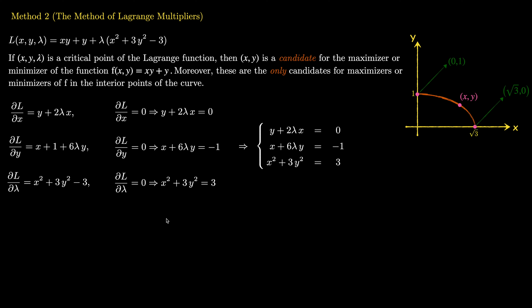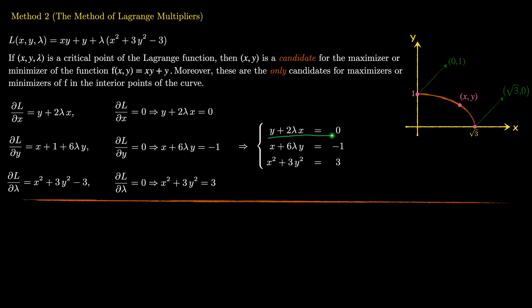From the first equation, I solve for λ: λ = −y/(2x). I can divide by x because x ≠ 0 — if x = 0, then from the first equation y = 0, but substituting into the constraint gives 0 = 3, a contradiction. Substituting λ into the second equation and multiplying through by x gives a new equation relating only x and y.